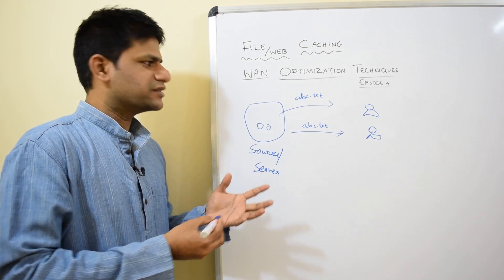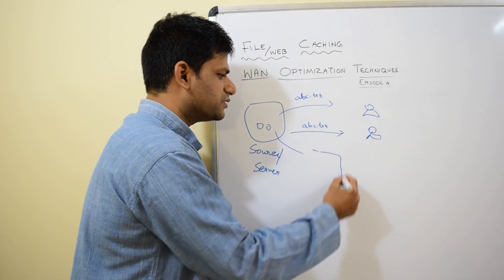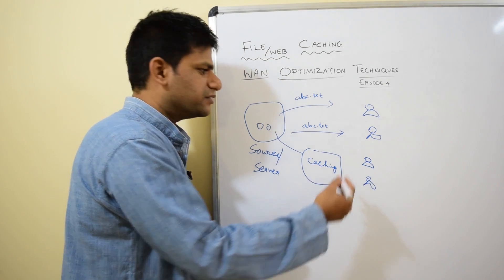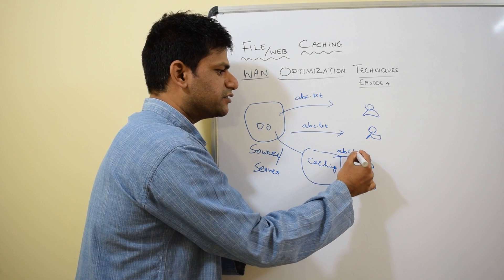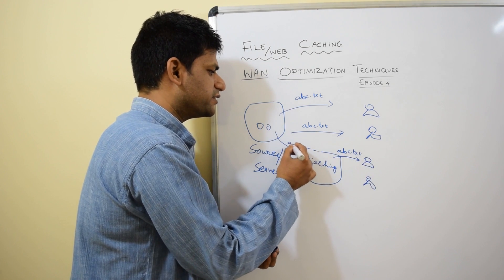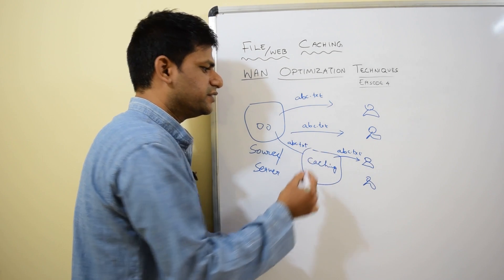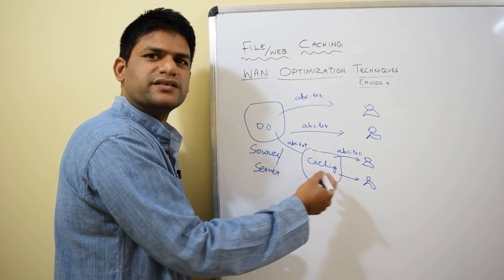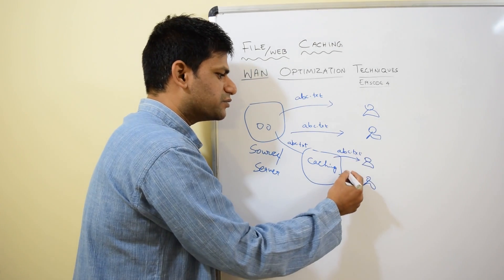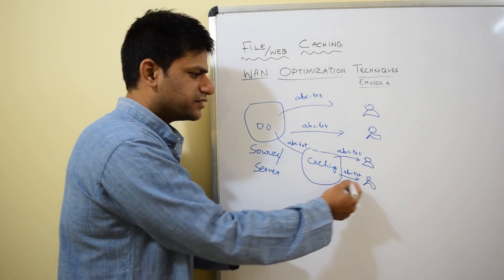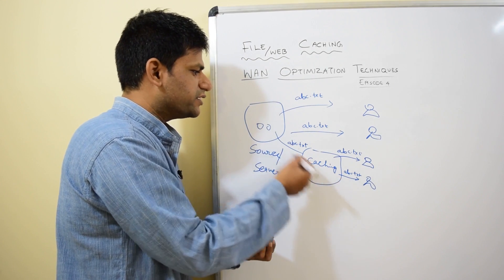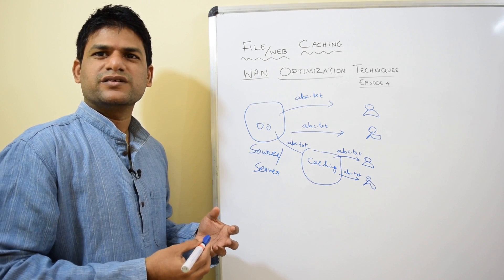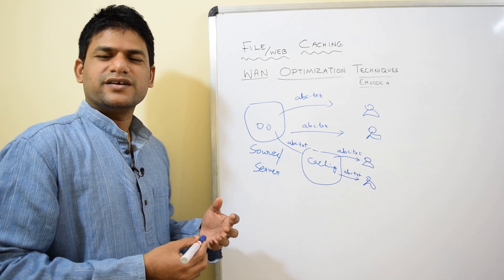With the introduction of caching, you can have a caching server. When various users request a file, the caching server pulls ABC.txt once from the origin, and any subsequent request from other users can simply pull it from the cache. In this case, it may no longer need to pull from the origin source again.